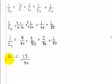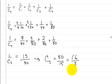This is equal to 1 over the capacitance in series. And so now, all we do is just flip them, and we get the capacitance in series is equal to 80 over 15. And if you want to reduce this down, then we'd get 16 over 3. And that's how you would do it.